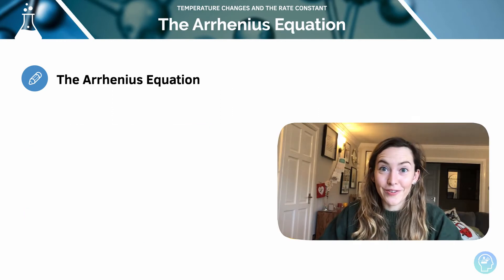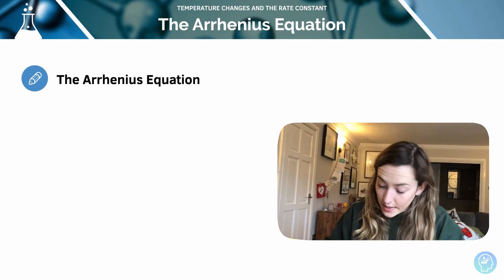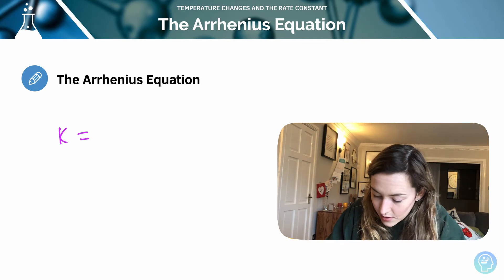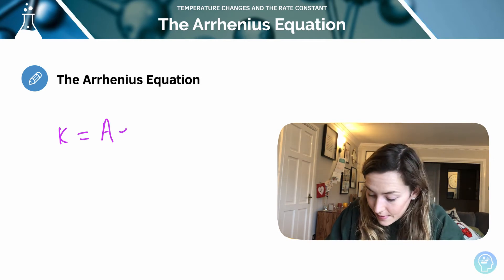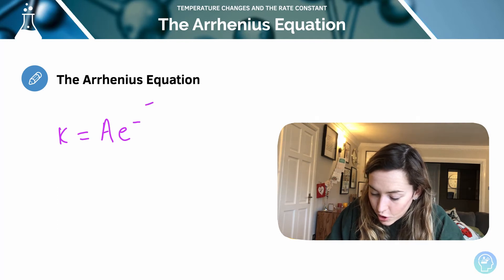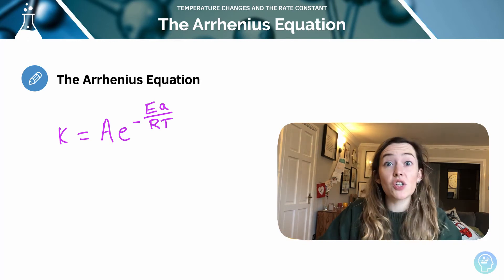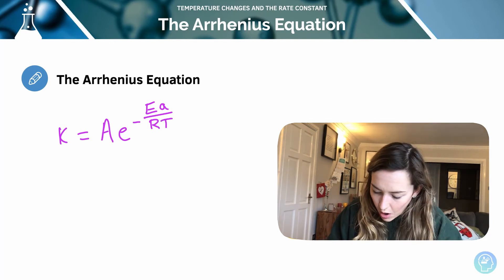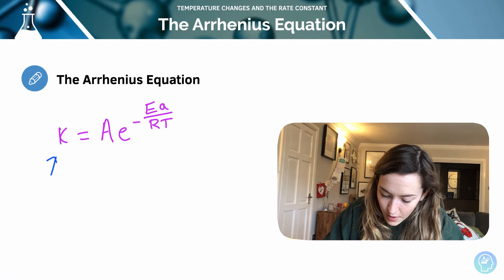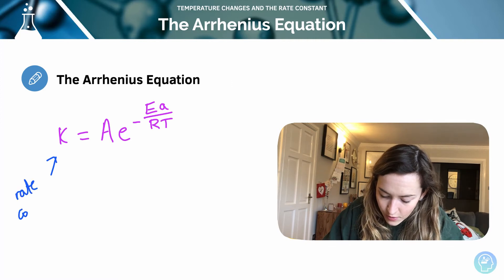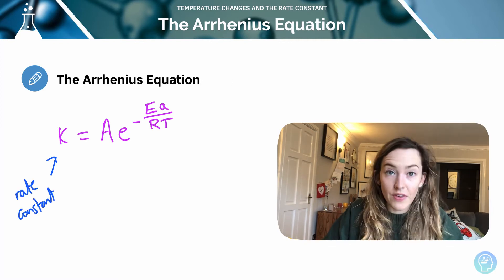Let's introduce the Arrhenius equation. So this is it: we've got k, our rate constant, is equal to A times e to the minus of an exponential function, the activation energy over RT. And let me just explain what each of those components are. So of course we've come across k before, this is our rate constant. We learned about that in the previous session.